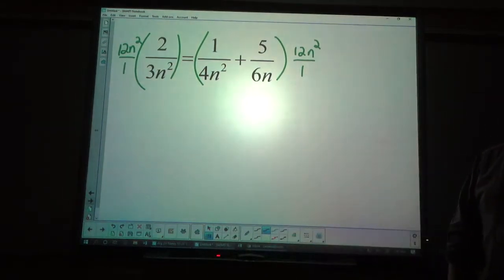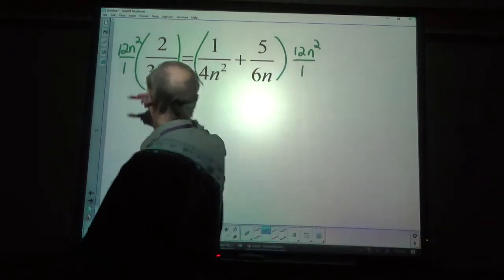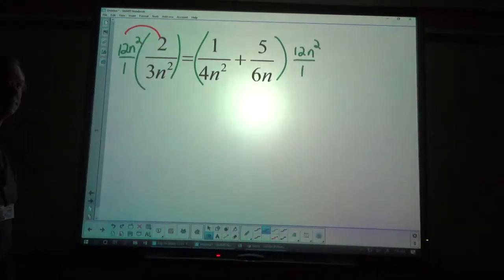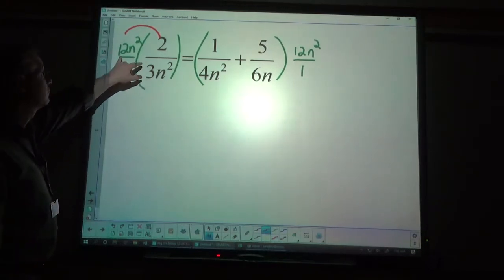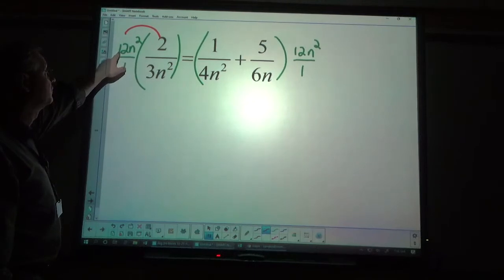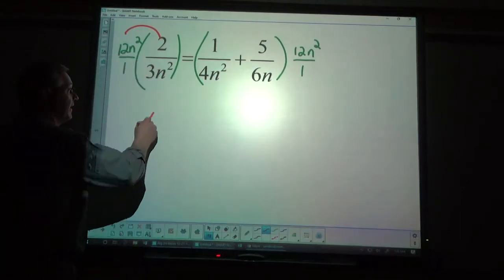Of course, my audience today is really my honors algebra 2 students. So, I'm not going to do all that work on the side, but if you ever do need me to do that work on the side, just ask for it. I'd be happy to show it to you. So, when I distribute here, the n squareds completely cancel out. The 12 and the 3 reduce 1 and 4. 4 times 2, 8.